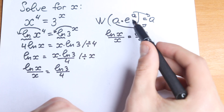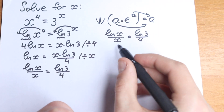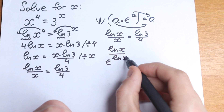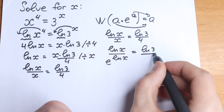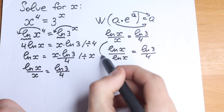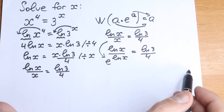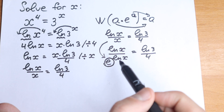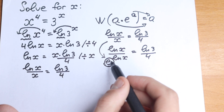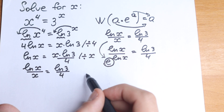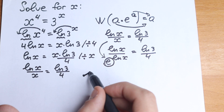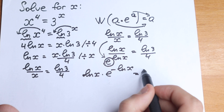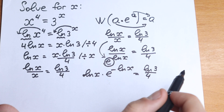We can easily introduce e here. Let's write this x in the denominator as e to the power natural log x, giving us natural log x over e to the power natural log x equal to natural log 3 over 4. But we need the e in the numerator, so let's bring it up — we put a minus sign, giving us natural log x times e to the power minus natural log x equal to natural log 3 over 4.